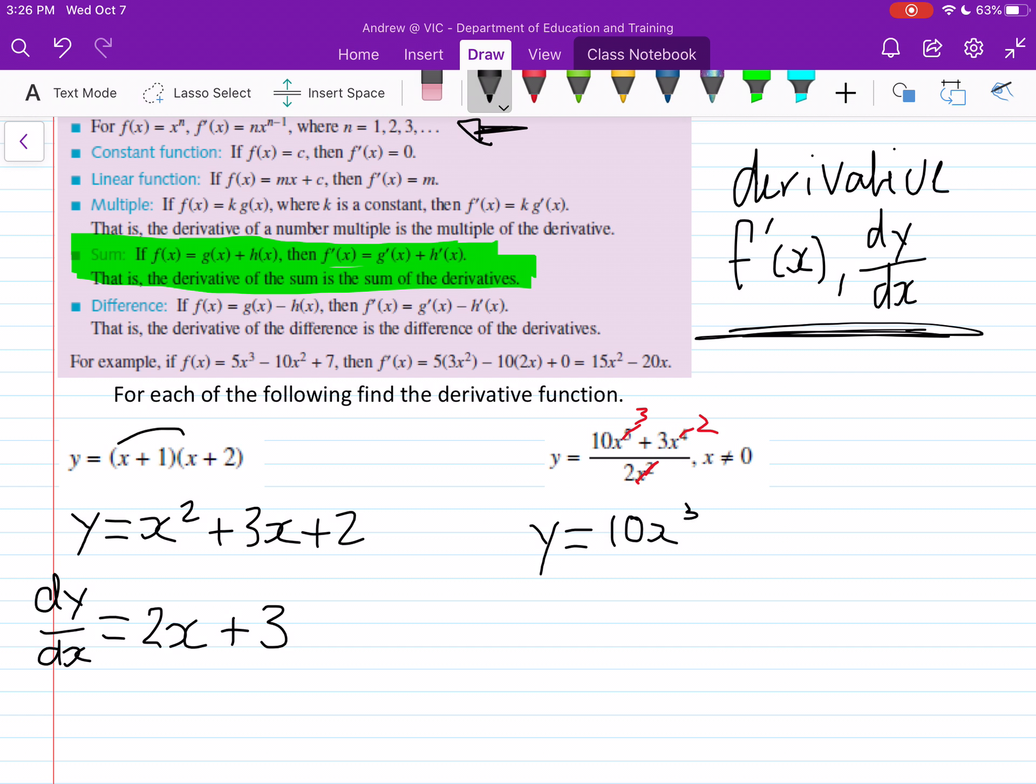And that's over 2, and then we've got plus 3x squared over 2.